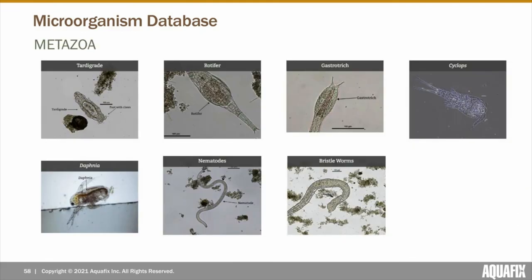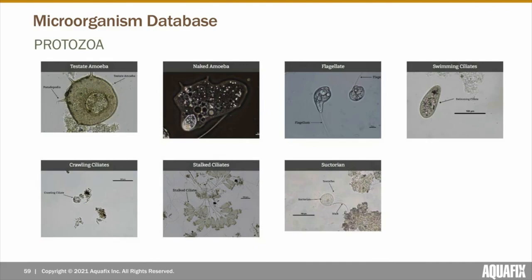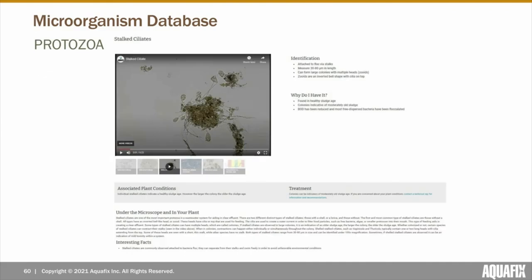The next section in our database is metazoa and protozoa. These pages have the same content as our filament pages; however, they can also contain videos. For example, the video on our stalk ciliate page shows how some stalk ciliates have the ability to contract their stalk in order to help them feed. Our microorganism database not only includes descriptions of protozoa, metazoa, and filamentous bacteria, but it also covers plant algae and other organisms found within wastewater.